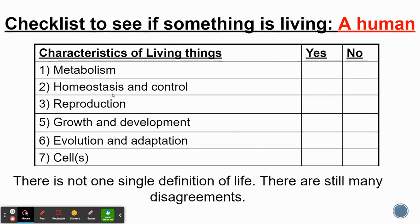We can apply these seven characteristics to determine if something is living. Take a human: does it need energy? Yes. Does it maintain stable internal conditions like body temperature? Yes. Can humans reproduce? Yes. Do humans grow and develop? Yes. Have humans evolved and can they adapt? Yes, they are evolving. Are humans made of cells? Yes — if you zoom in on our tissues with microscopes, you'll see we're made up of many, many cells. So we have all the characteristics of life and are considered living.